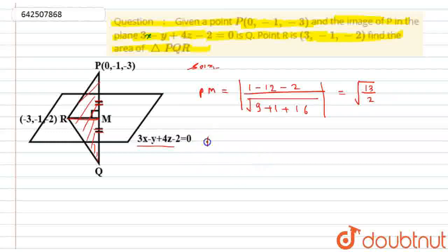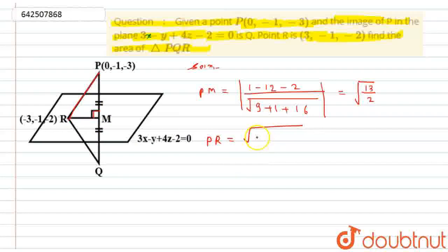Now, from here, the length of PR, this PR length will be equal to under root of—now, as this is a right angle triangle, so in right angle triangle, by Pythagorean theorem, I can say that PR will become equal to 3 square plus 1 square will be equal to under root of 9 + 1 + 1, will be equal to under root of 10.